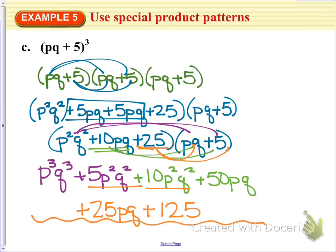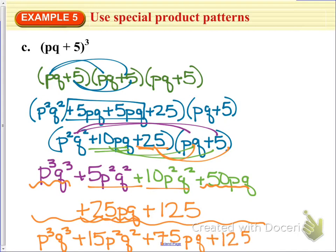So those will add up, p to the third and q to the third stays the same. Plus 15p squared q squared. And then we've got 50pq plus 25pq to get 75pq plus 125. And so that is our expanded binomial to the third power.